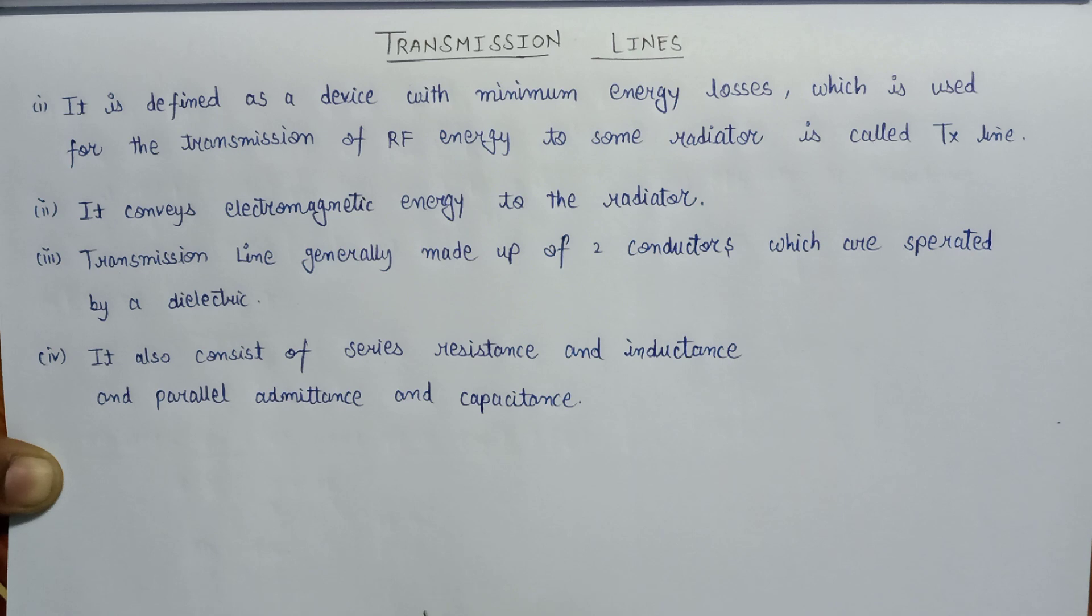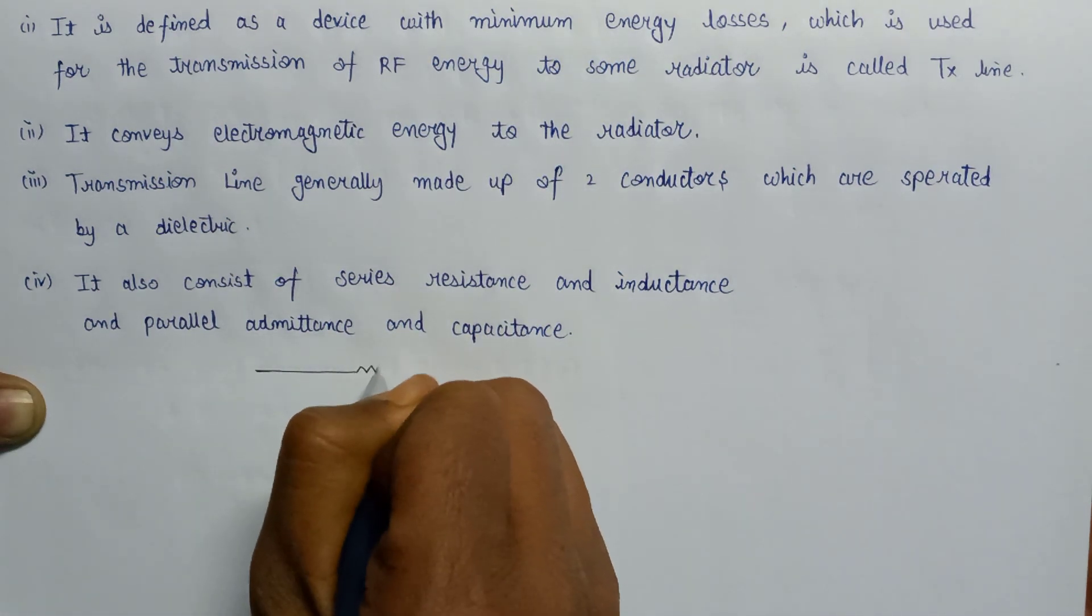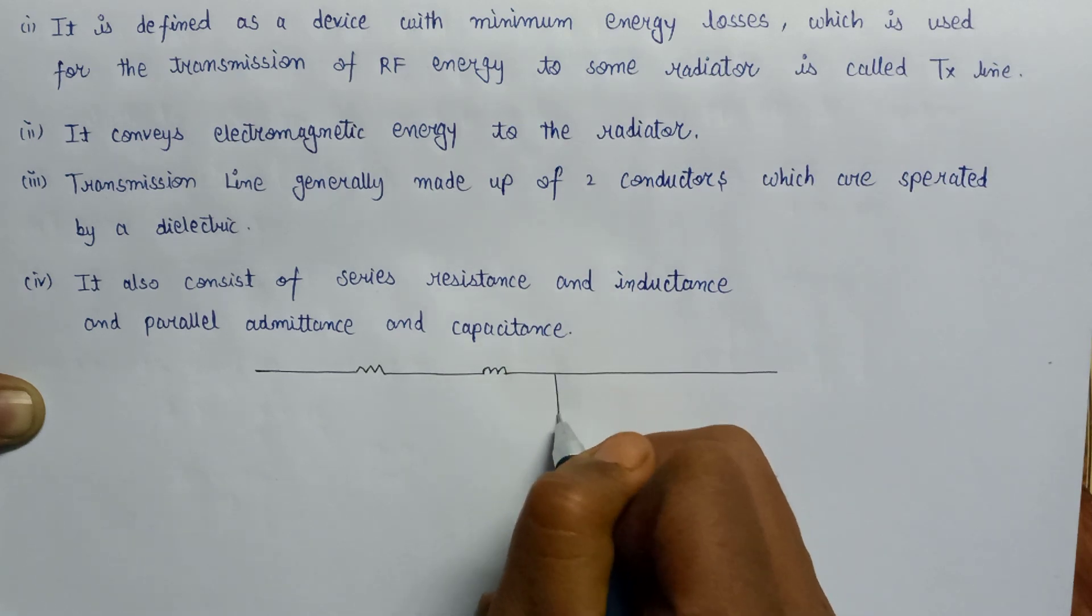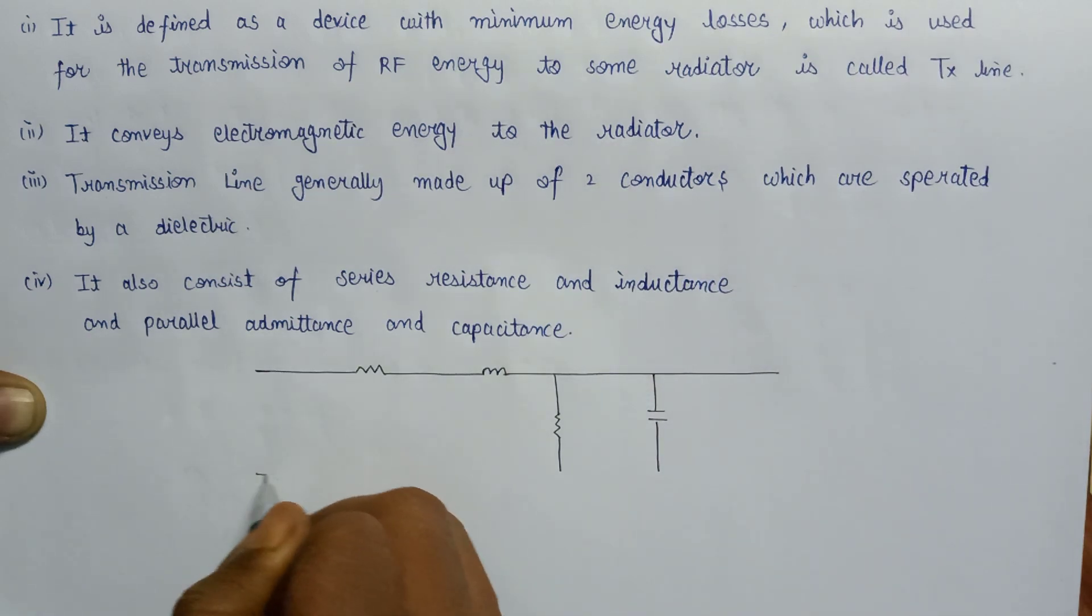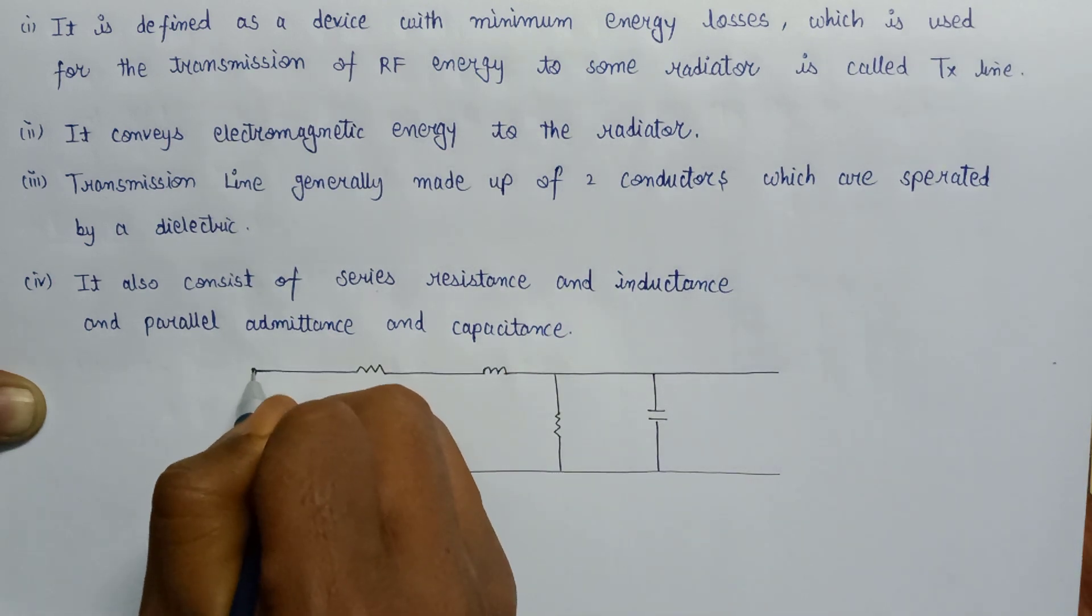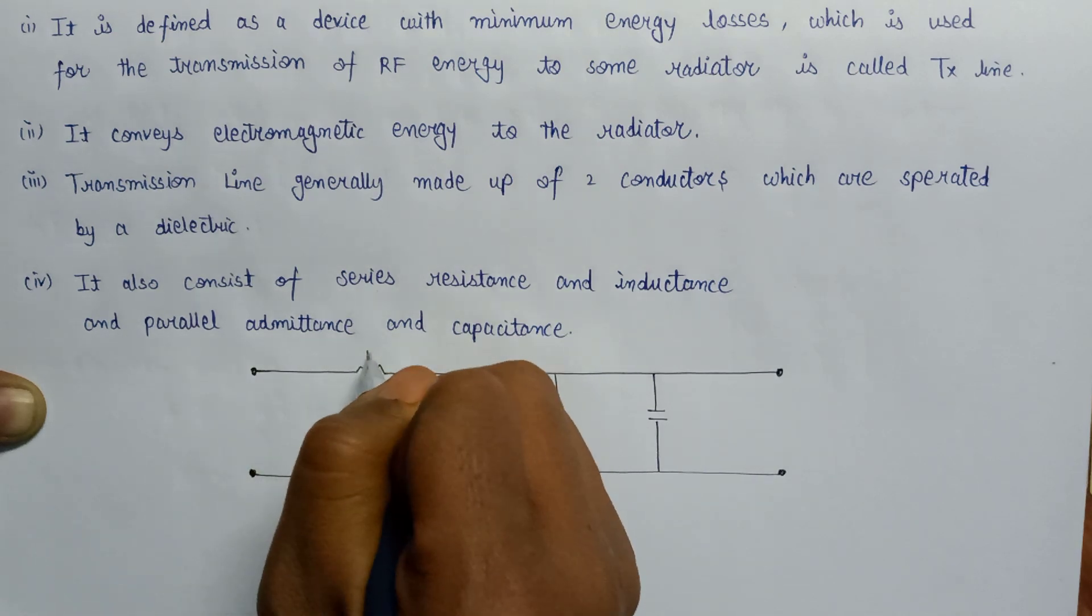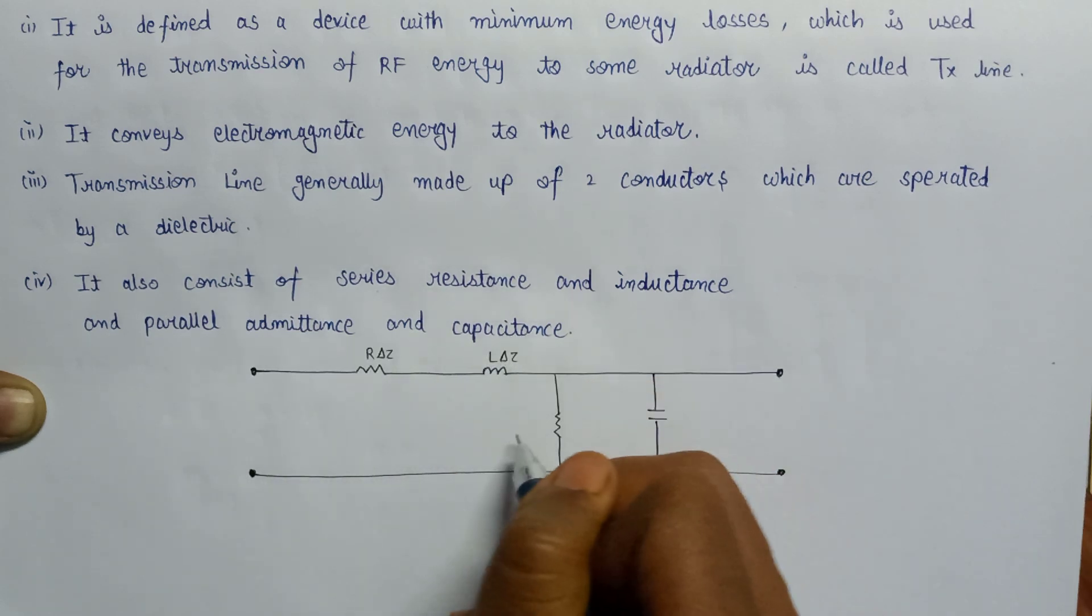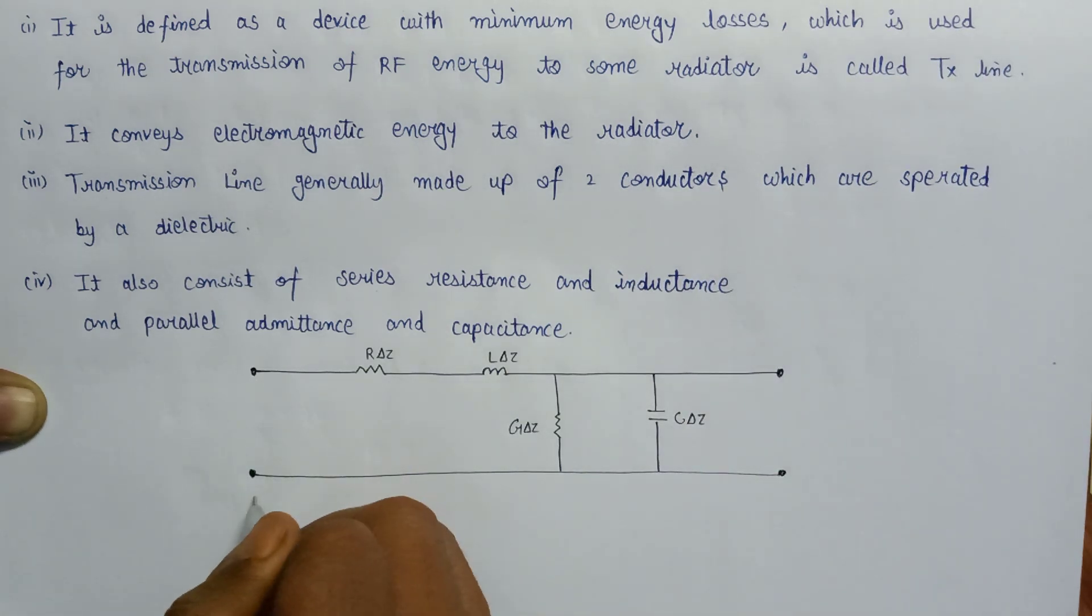Let us draw a structure for the transmission line. This is the resistance, this is inductance for the transmission line. Here is the conductance, and here is the capacitance that is being connected in the parallel combination. This is the input node of the transmission line, and here is the output. This is inductance, this is resistance, and this is inductance. This is conductance that is G del Z, and here is the length of this whole transmission line is equal to del Z.